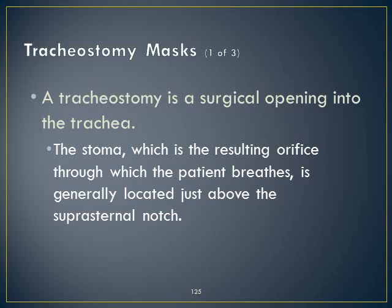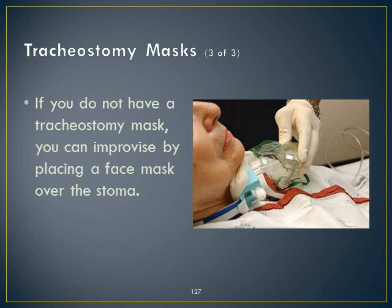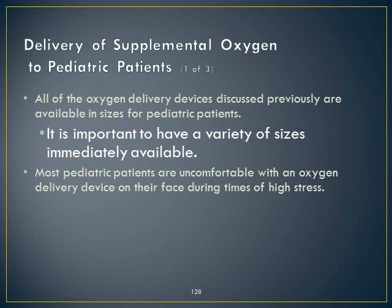Tracheostomy masks are placed over the stoma to deliver supplemental oxygen. If you don't have a tracheostomy mask, you can use a pediatric non-rebreather, or use the 15 mm connector most tracheostomies have to hook up to a ventilator. All oxygen delivery devices can be used on pediatric patients — you just use smaller sizes, though you can adapt adult sizes if needed.